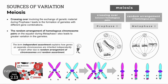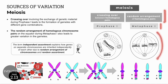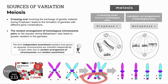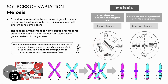A quick review of the two sources of variation in meiosis. First, crossing over between homologous pairs of chromosomes in prophase 1. Crossing over involves a maternal chromosome from the mother and a paternal chromosome from the father, and they exchange genetic material in prophase 1 to introduce variation and different gene combinations in the gametes produced by meiosis.